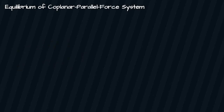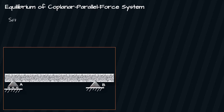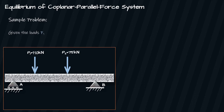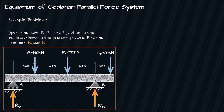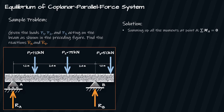Coplanar parallel force systems are parallel forces lying on the same plane. These are forces that do not meet or intersect and have the same distance throughout the force's line of action. For our sample problem: given loads P1, P2, and P3 acting on the beam as shown in the figure, find the reactions RA and RB. To solve this problem, we sum up all the moments at point A — that is, summation of MA equals zero.